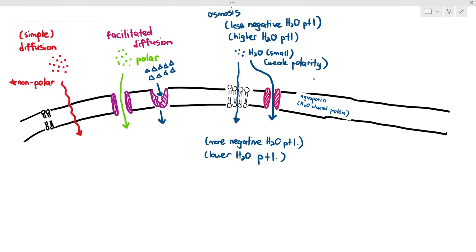In some cases, cells may have to move particles against the concentration gradient, which means from lower to higher concentration. They use something called a pump protein, and that is known as active transport. Active transport also requires ATP as an energy molecule. This is the summary of passive and active transport.